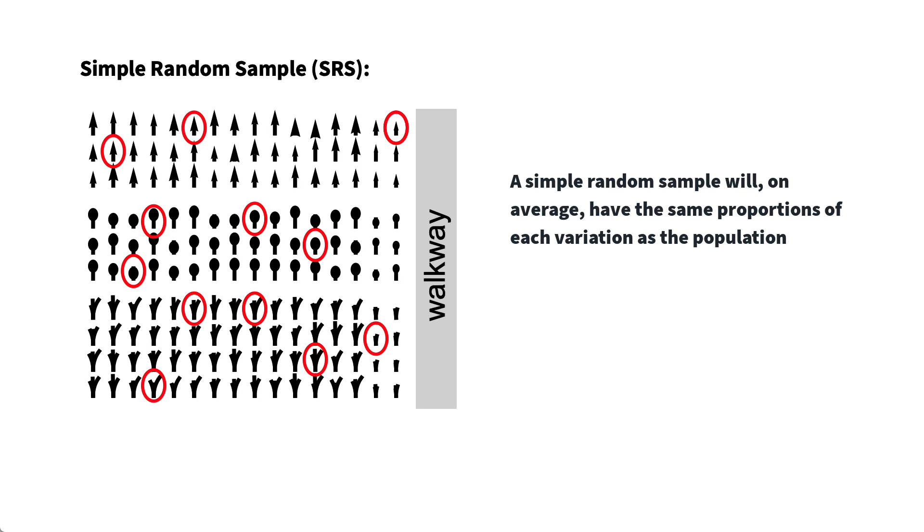Although simple random sampling is conceptually easy to understand, simple random sampling can be quite difficult to do in practice, and so biased samples are quite common.